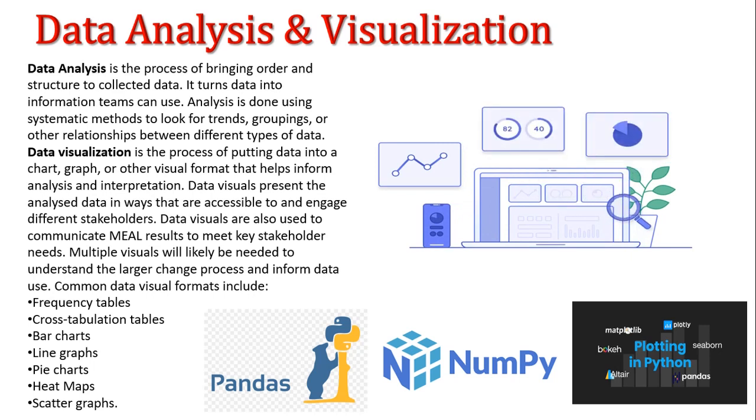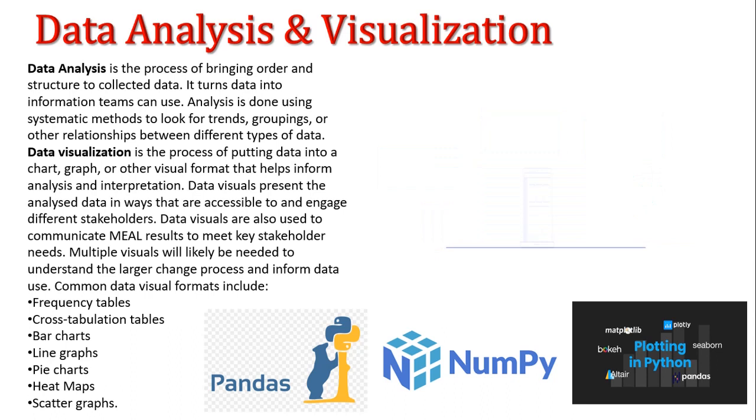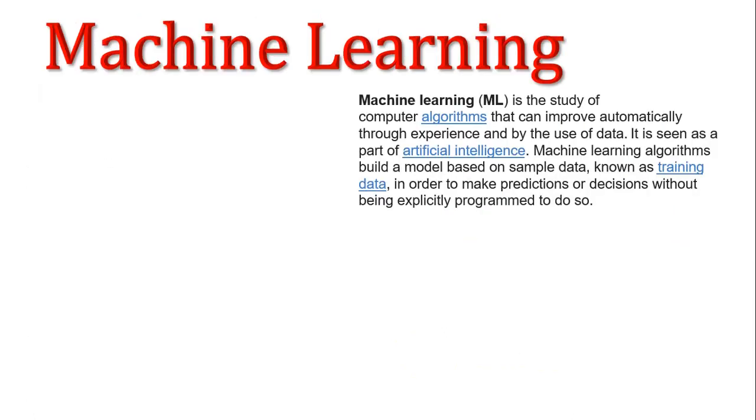So guys once you are good with statistics, python programming and data analysis now it's time to jump into machine learning, deep learning, computer vision or NLP. So guys if you are targeting for data analyst then machine learning is not that much needed but if you are looking for data scientist then after data it is the top most priority.